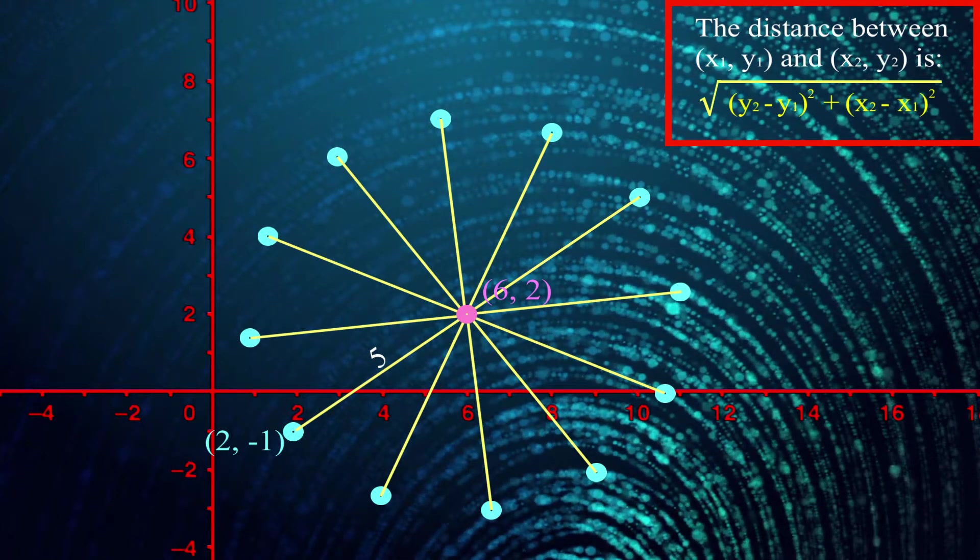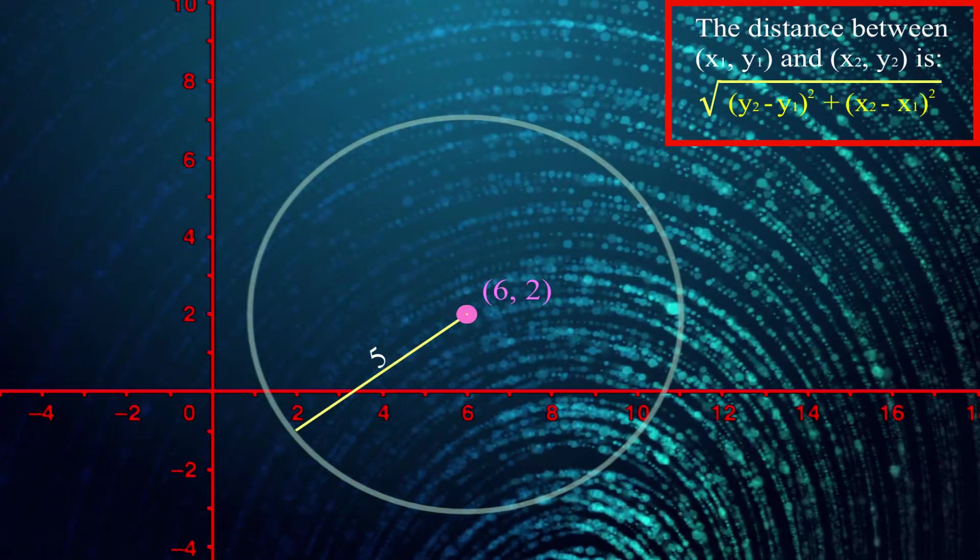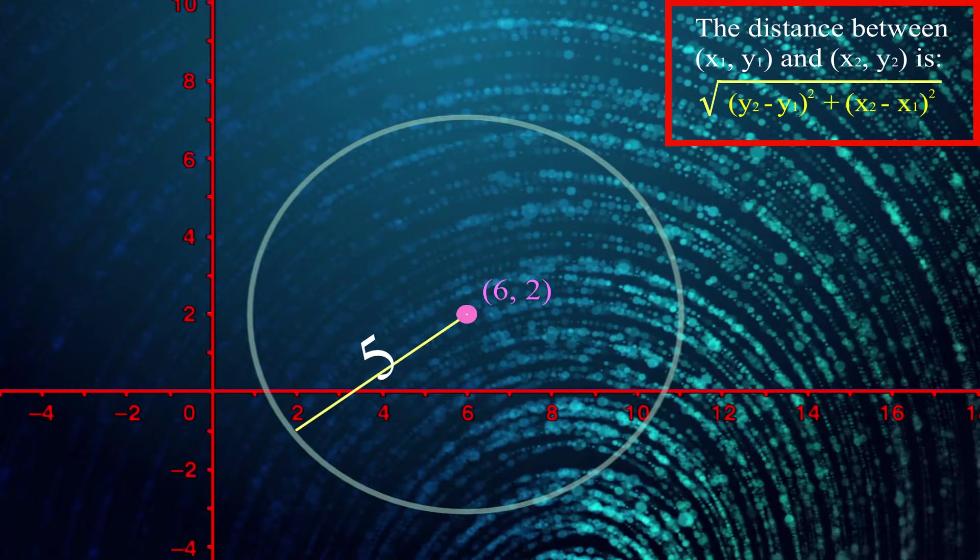And if we took a look at all of the dots that were exactly 5 away from the pink dot, they'd form a circle. More specifically, a circle centered at the pink dot with a radius of 5.